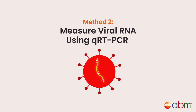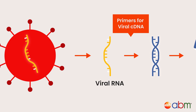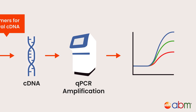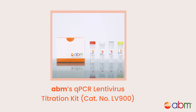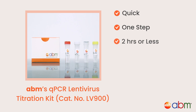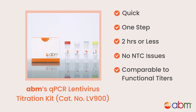Method two: measure viral RNA using qRT-PCR. In this method, viral RNA is converted to cDNA, then qPCR primers are used to target specific viral components, allowing viral RNA to be quantified. ABM's qPCR lentivirus titration kit enables quick, one-step quantification of lentivirus in less than two hours directly from viral lysate. The kit comes with unique primers for lentivirus to eliminate NTC amplification and ensure accurate titer measurement. This kit is calibrated against functional assays, so even though it measures physical titer, the values calculated are close to the results from functional titers.